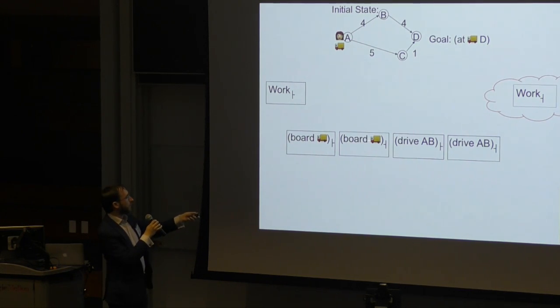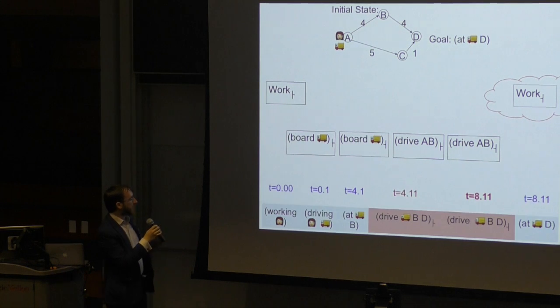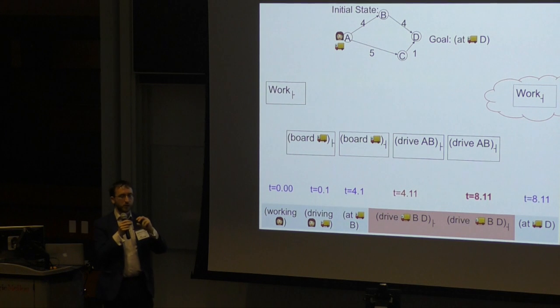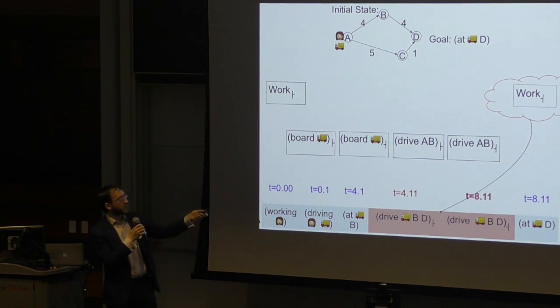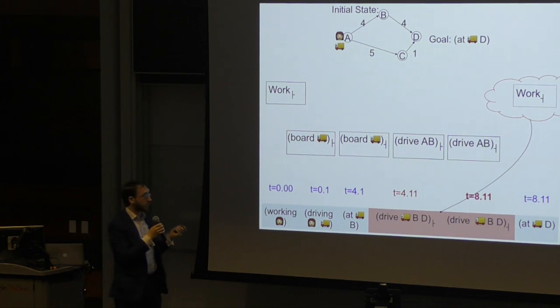Let's return to this example. So we've applied some actions. We're going to give it to our relaxed planning graph heuristic and we get something like this. These are the facts we have in the state, so those are the times they were achieved. We can then drive from B to D, so that starts at time 4.11. It's the time at which we got to B plus a small amount of separation, an epsilon separation between an effect and the precondition that used it. The duration of driving from B to D is 4, so the end of it appears at time 8.11, and then we've achieved the goal. In reality that's nonsense though, because the end of this work action would occur at some point when we were driving from B to D. But because it's a delete relaxation heuristic it's going to ignore that negative effect and it thinks the problem is solvable.